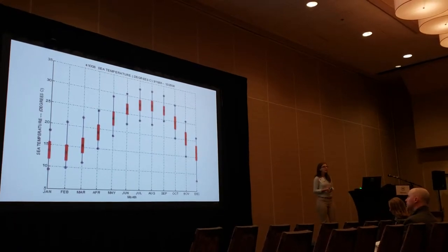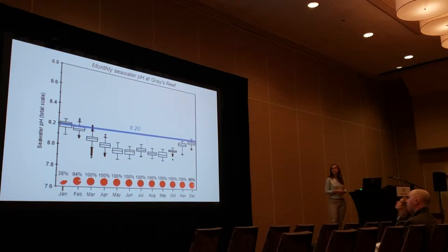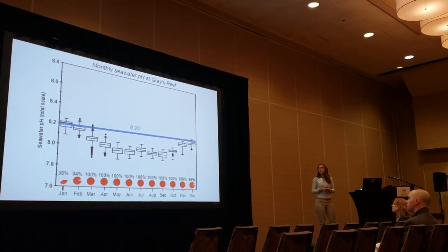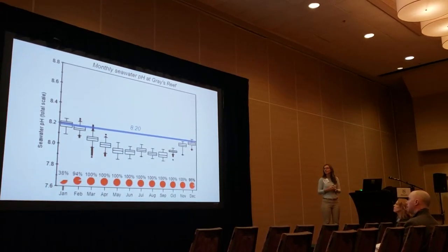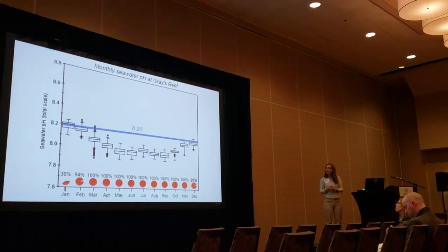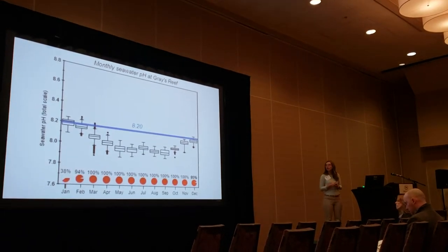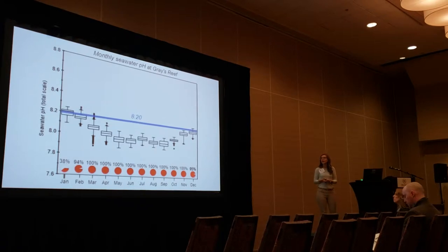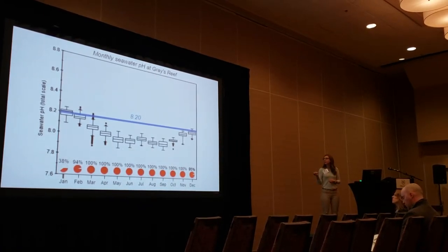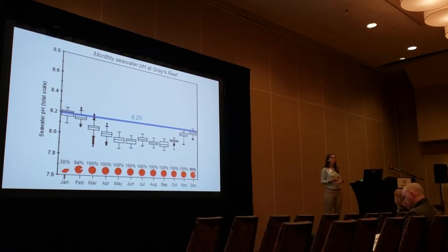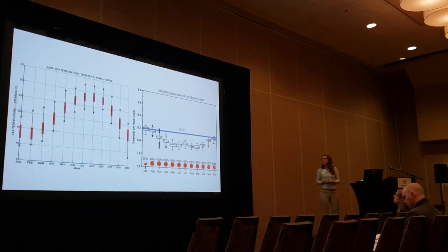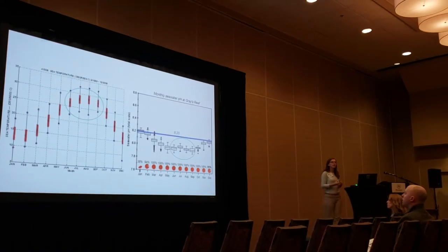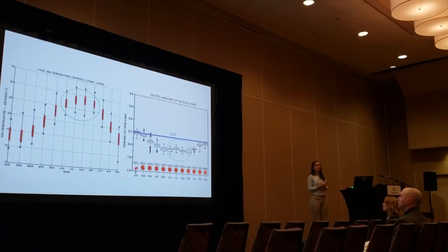Interestingly, when we get a rise in temperatures like that, we're also seeing a drop in pH during the summer months. This figure shows seawater pH on the y-axis and months on the x-axis. The blue line shows a pH of 8.2, which is generally accepted as the global average ocean pH. The red bars at the bottom show the total percentage of measured values below 8.2. Around June to September, at the same time we're seeing high temperatures, we're getting pHs sometimes as low as 7.6, which is pretty low for this area. In a way, this system is naturally mimicking what we expect to see with climate change.